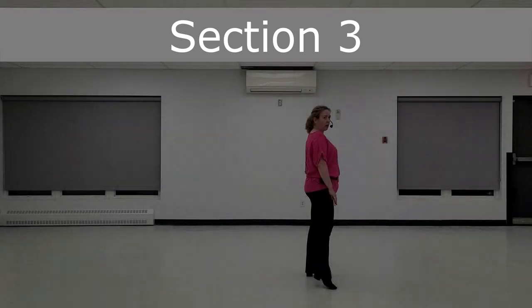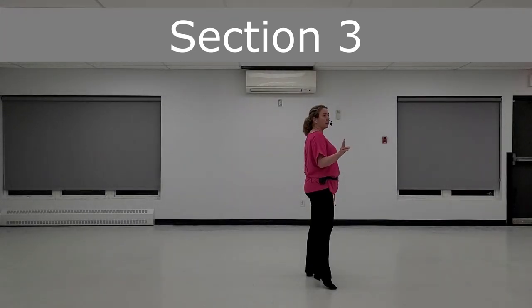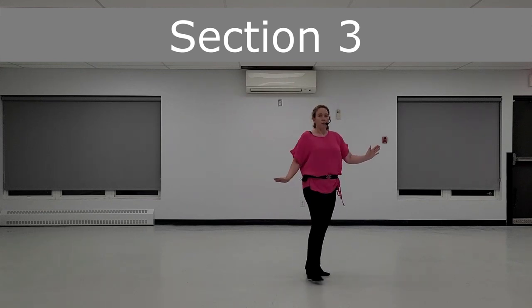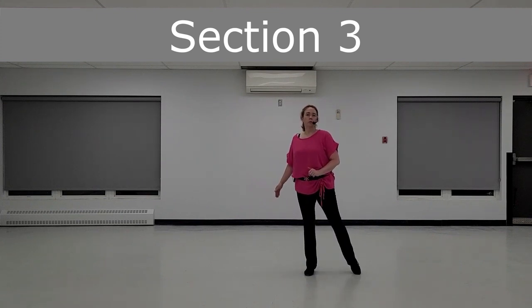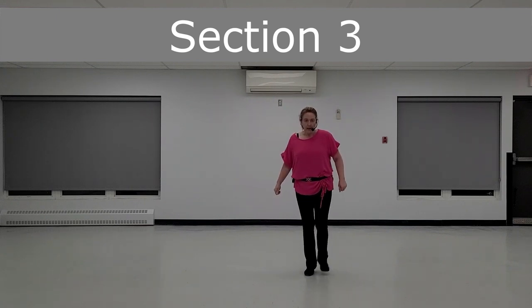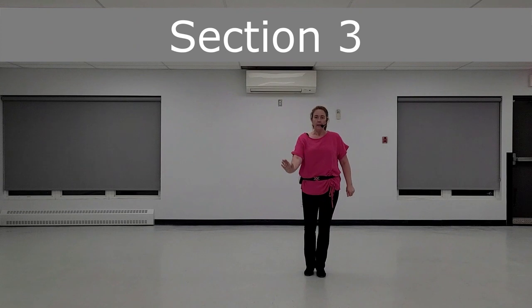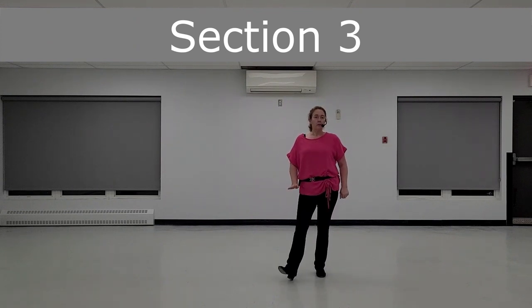The third section now. You will make like a monterey. So you will turn a quarter to your right on your right foot for one, pointing to the left for the count of two. And then you take your left foot heel in the diagonal for three. Hold four.